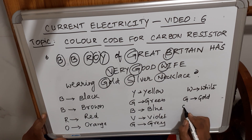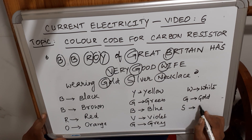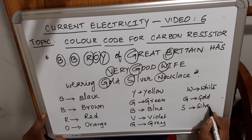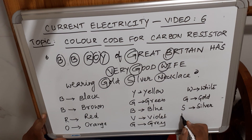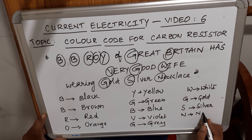Continuing: G — Gray, W — White, then G — Gold, S — Silver, N — No color.